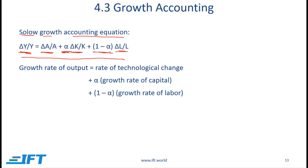We've discussed alpha and 1-alpha earlier. Alpha represents the relative share of capital in overall income, and 1-alpha represents the relative share of labor in overall income. But this relationship also gives us another interpretation: we can think of alpha as an elasticity. Taking the United States as an example, alpha is approximately 0.3 and 1-alpha is 0.7.